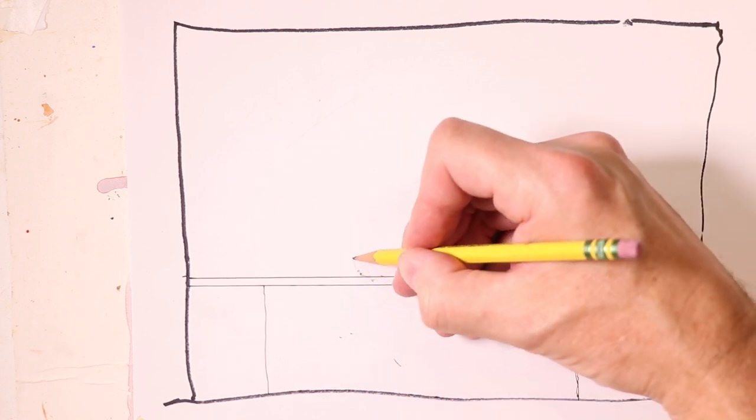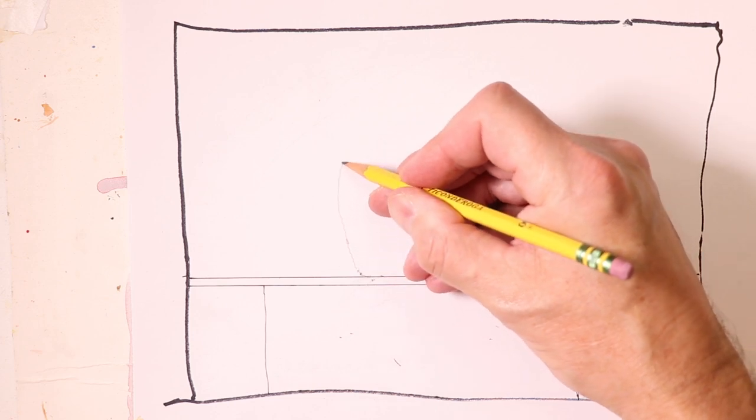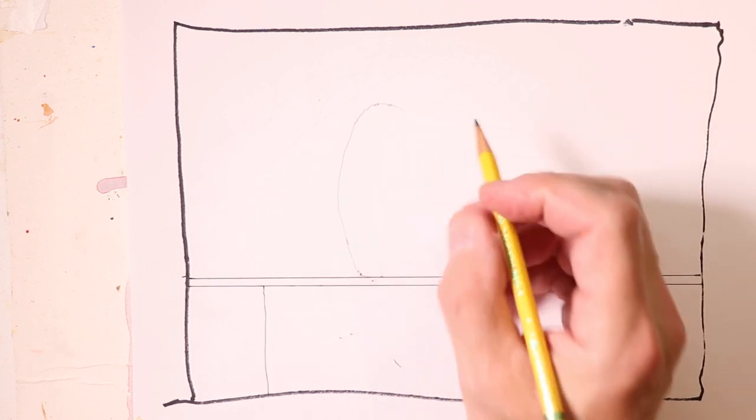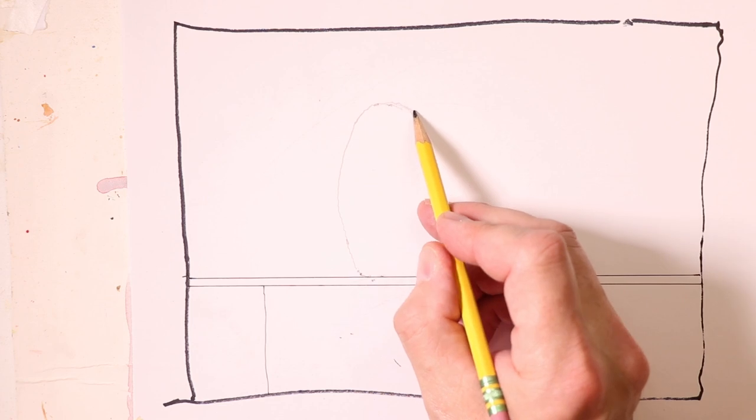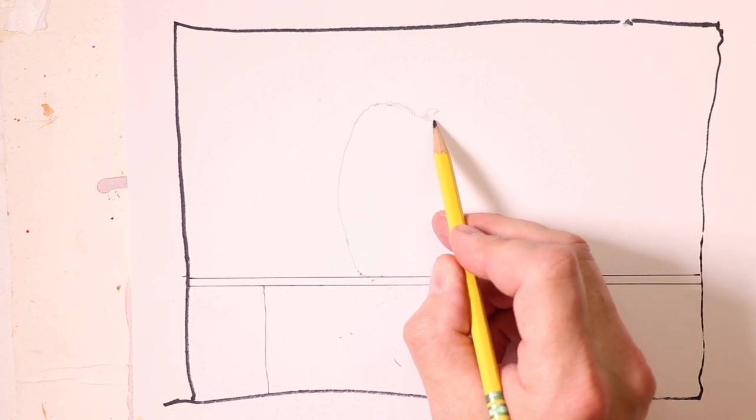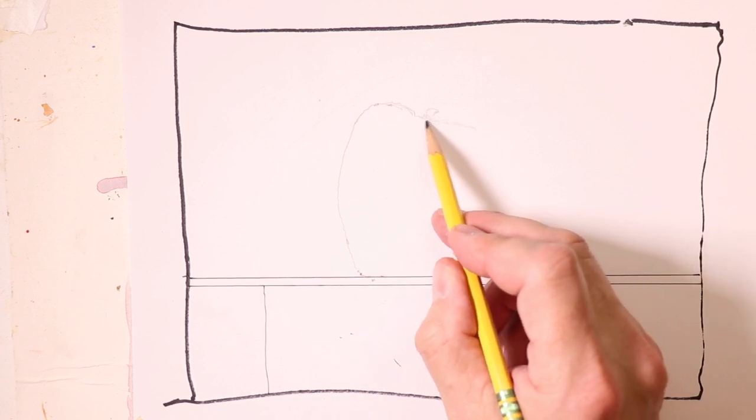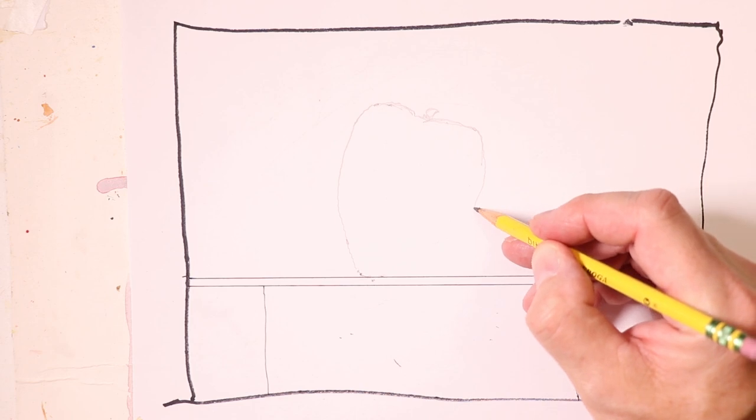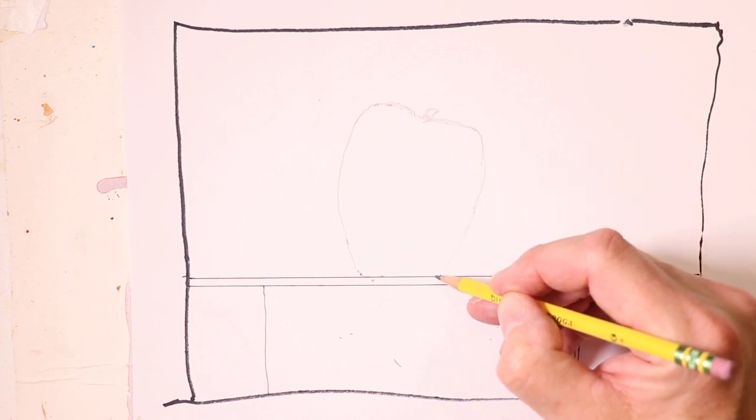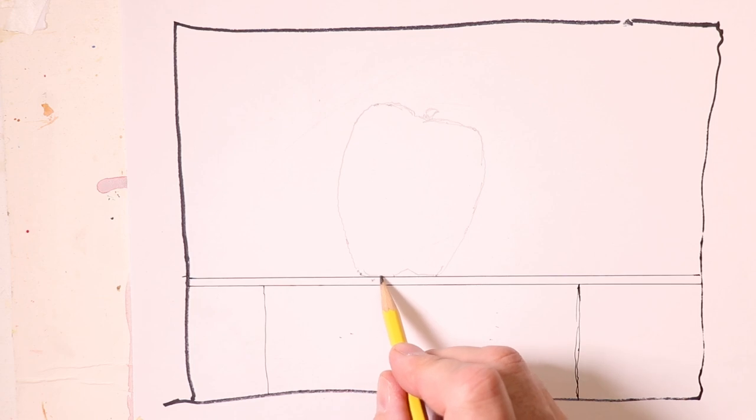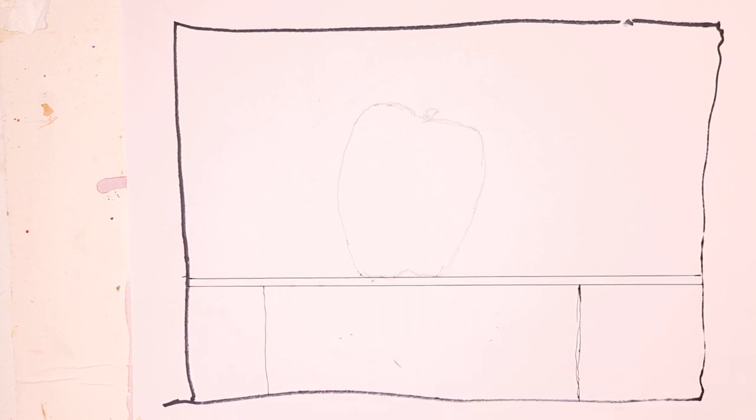And we're gonna do a preliminary sketch. So just a light sketch of this red delicious apple. We're going slow. We're just trying to get all the little angles and curves. And then we have the stem there, and this goes around, and it comes down like that. And there we have it. That's our red delicious apple.